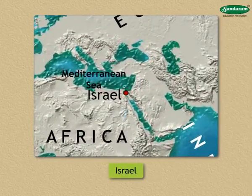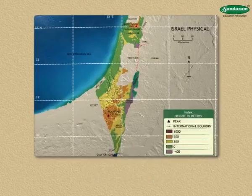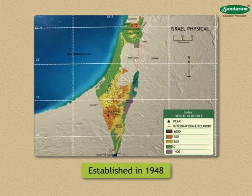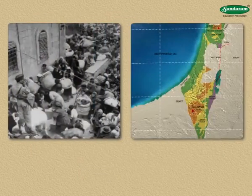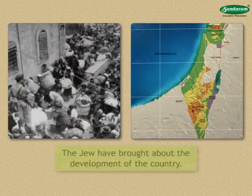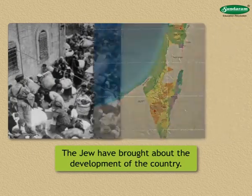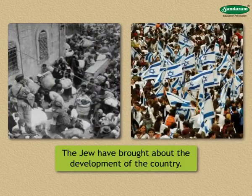Israel is a small country in the southwest of Asia near the Mediterranean Sea. The State of Israel was established in 1948. The Jewish people, who had long suffered displacement, brought about the development of this country on the strength of their unity.